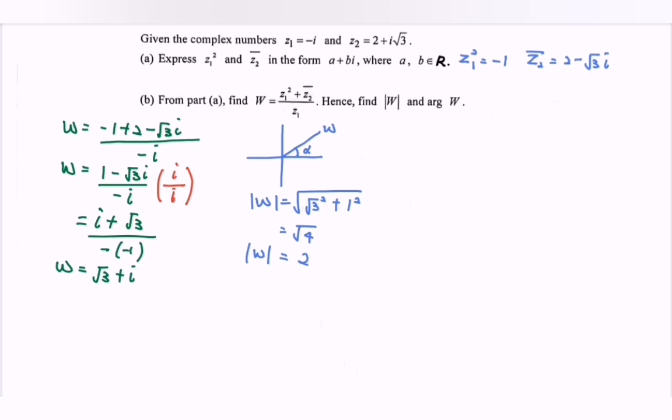Next is to find the angle. So tangent alpha equals 1 over square root of 3. By referring to the calculator, alpha equals 30 degrees. So here we have the basic angle, meaning here we have 30 degrees.